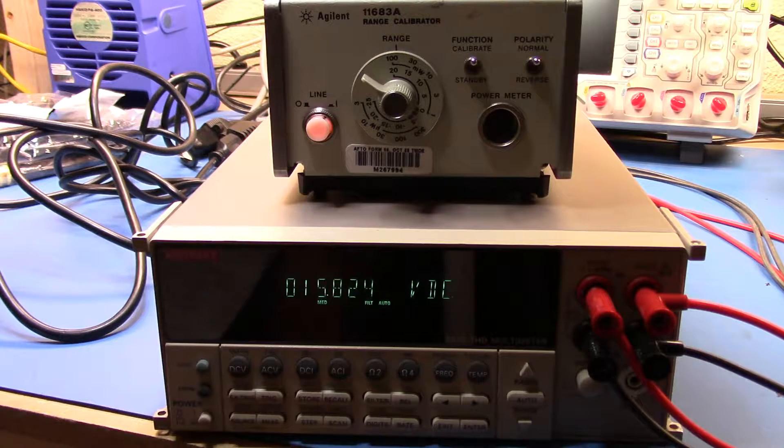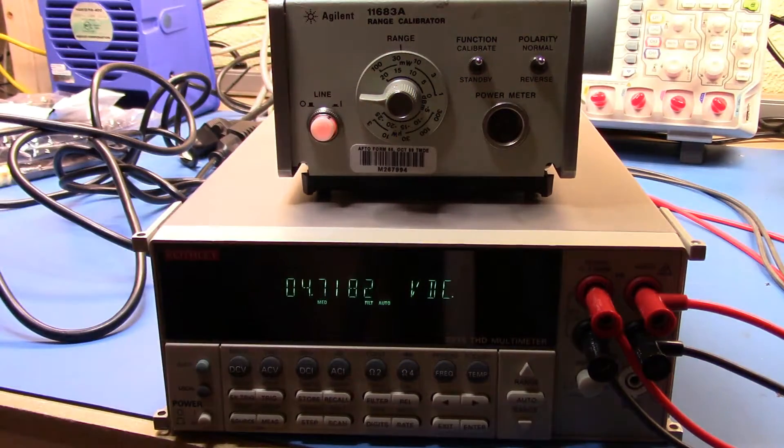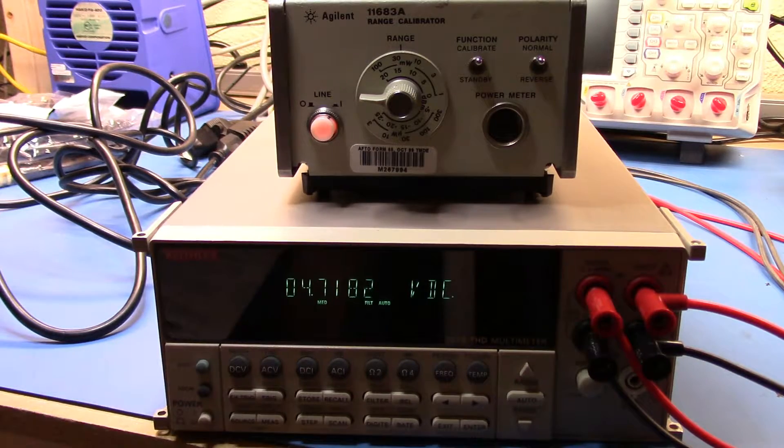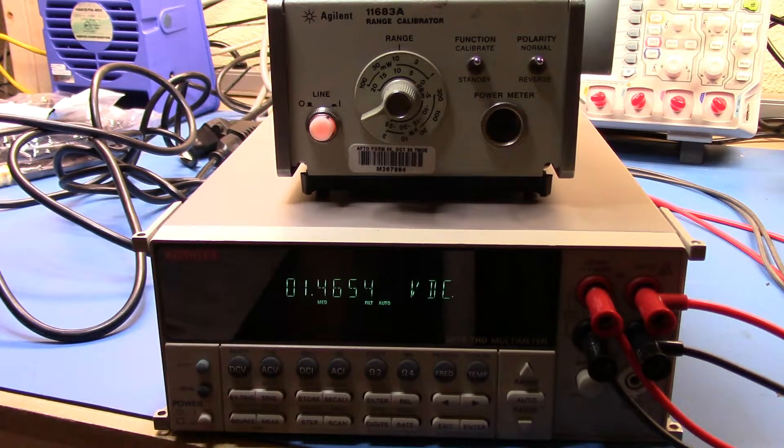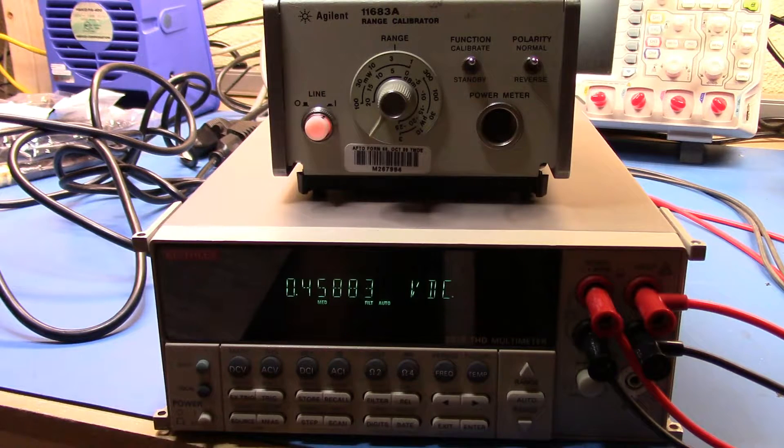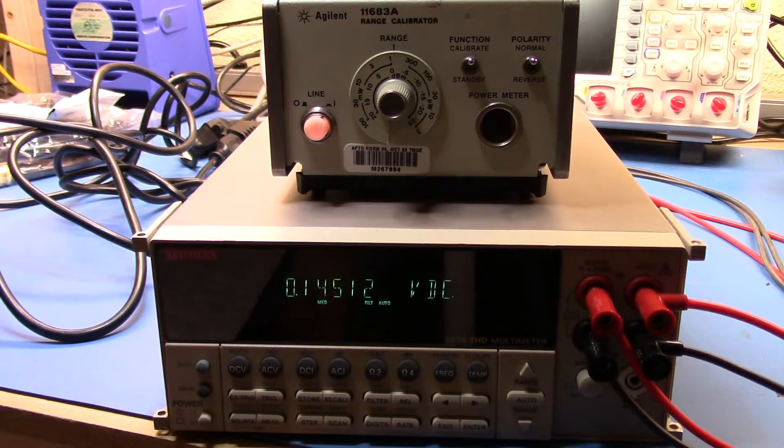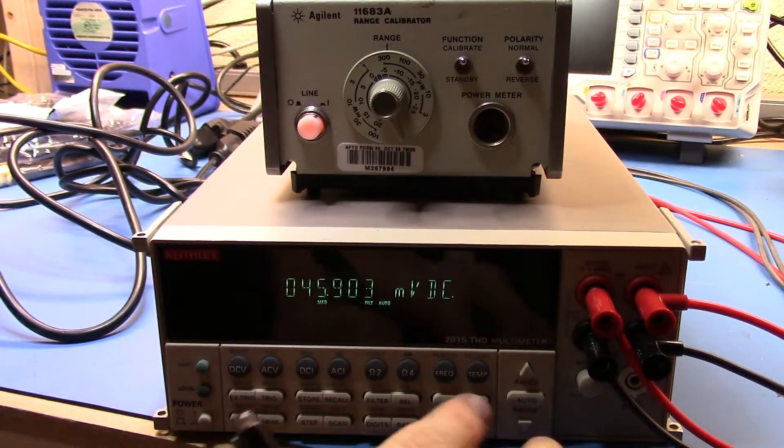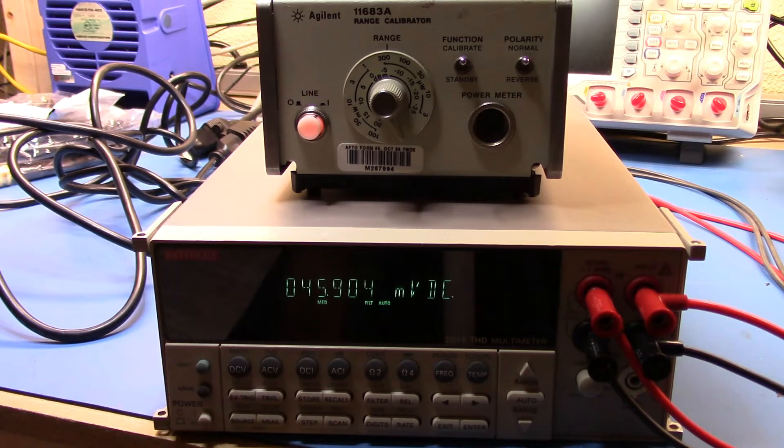Let's go back up to the top and we'll put the range on auto and then we'll start recording some numbers. Okay: 15.824 volts, 4.718, 1.4654, 0.4441, 158.83 millivolts, 145.12 millivolts, and 45.903.